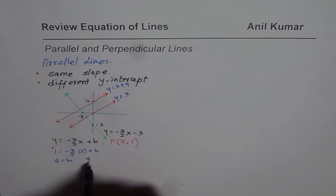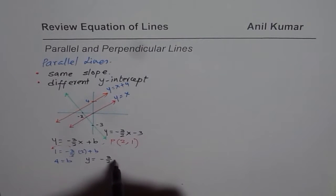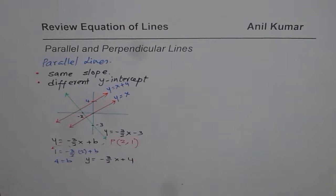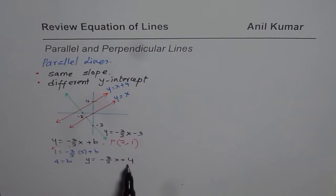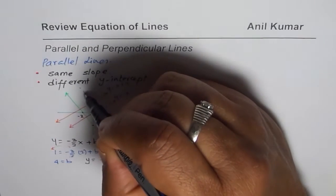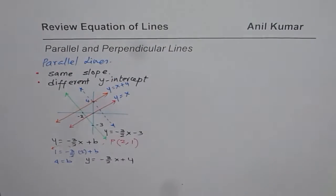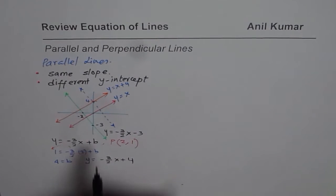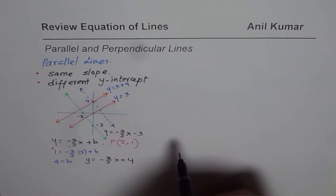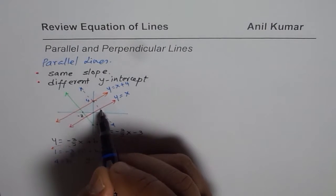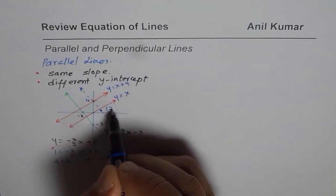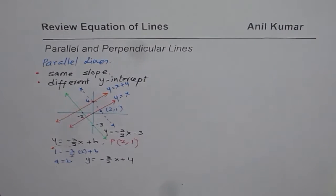Once we know that, we can write the equation of the line as y equals minus 3 over 2x plus 4. The line parallel to the green line and passing through (2, 1) has a y-intercept of 4. It can be sketched with that y-intercept, and you'll find it goes through the point (2, 1).